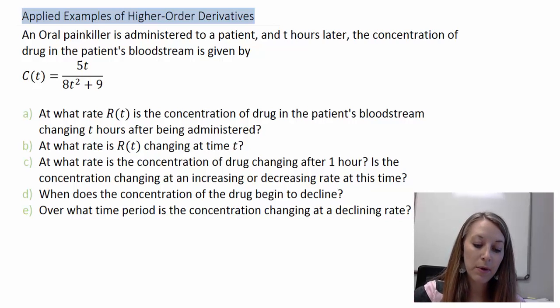An oral painkiller is administered to a patient, and T hours later, the concentration of the drug in the patient's bloodstream is given by this equation here. C of T, C standing for the concentration, and T standing for time, where that's defined as 5T over 8T squared plus 9.